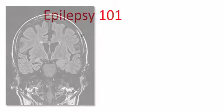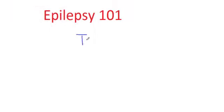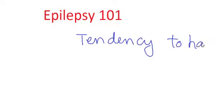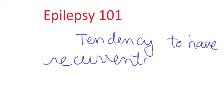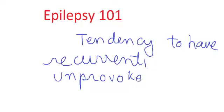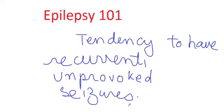When we talk about epilepsy, we are talking about the tendency to have recurrent, unprovoked seizures. Epilepsy is the tendency to have recurrent, unprovoked seizures. So if somebody just has a single seizure, we do not call it epilepsy. In clinical practice, if somebody has two or more seizures, then we consider the diagnosis of epilepsy.